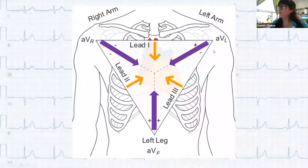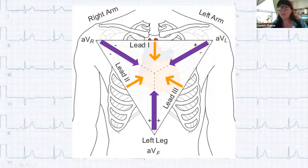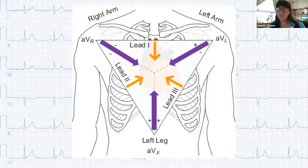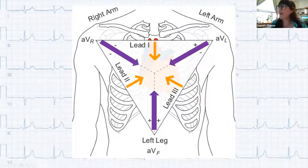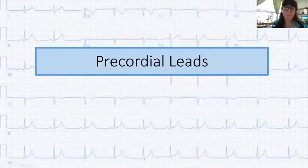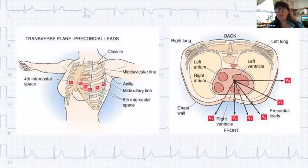The right arm and left arm come together looking down at the heart, and the left leg and right arm look from the side — three different angles. Leads AVR, AVL, and AVF are the augmented voltage limb leads, which are unipolar, looking in only one direction: AVF looks directly up from the left leg, AVR looks into the right side of the heart, and AVL looks to the left side. With just those six leads you actually get six different images.